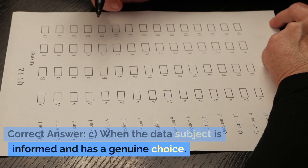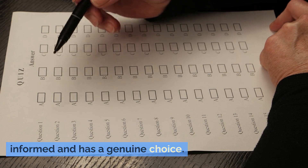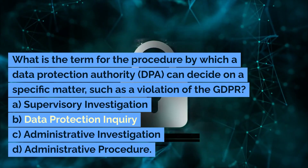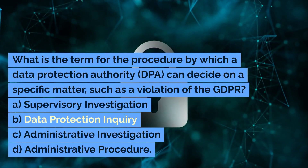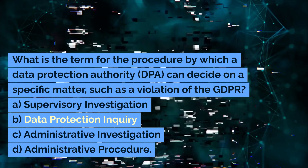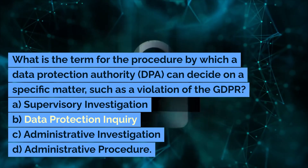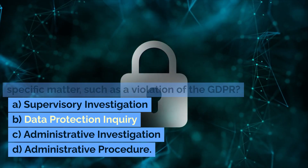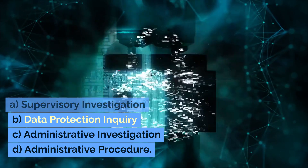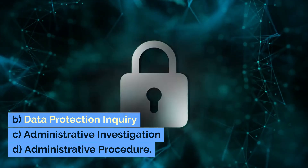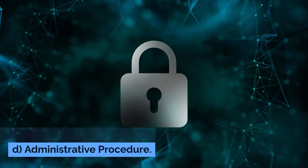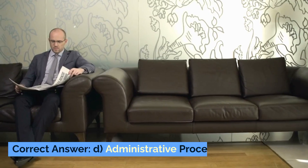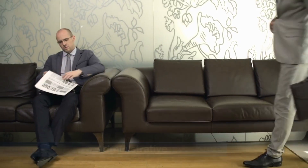What is the term for the procedure by which a data protection authority (DPA) can decide on a specific matter, such as a violation of the GDPR? A. Supervisory investigation. B. Data protection inquiry. C. Administrative investigation. D. Administrative procedure. Correct answer: D. Administrative procedure.